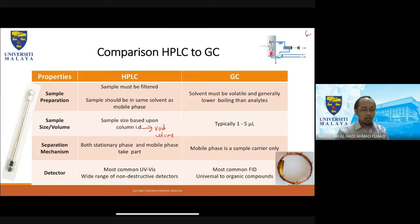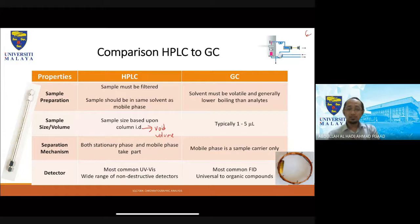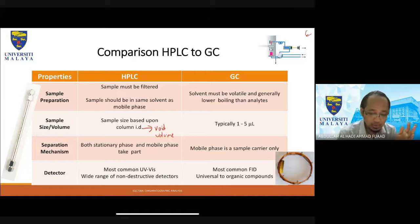GC is generally used for qualitative or quantitative analysis and does not require a high quantity of sample because GC is a destructive technique — it destroys the sample. HPLC, on the other hand, can be either destructive or non-destructive depending on the detector used. For GC, typically you only need one to two microliters of sample.